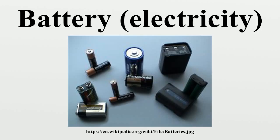Volta did not appreciate that the voltage was due to chemical reactions. He thought that his cells were an inexhaustible source of energy, and that the associated corrosion effects at the electrodes were a mere nuisance, rather than an unavoidable consequence of their operation, as Michael Faraday showed in 1834.